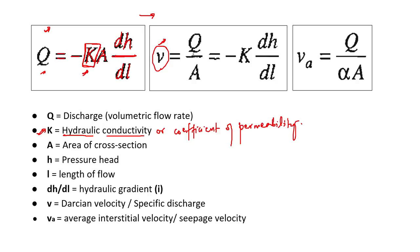This leads to V, which is Q divided by A — the volumetric flow rate divided by the area of cross-section. What you get is a unit of meters per second, which is a velocity. This is the velocity of water at point Y in the diagram. So V equals K times dH/dL, and V is called the Darcy velocity, or it is also called the specific discharge.